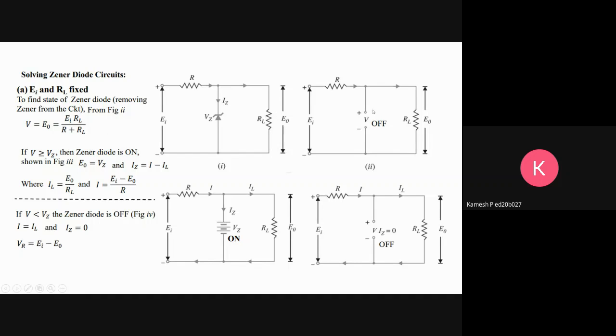We can find whether the Zener diode acts or not. For that, we take it as an open circuit and calculate the voltage that can be allowed. The voltage is Ei/(R+RL) times RL, which is the voltage applied across the Zener diode part.